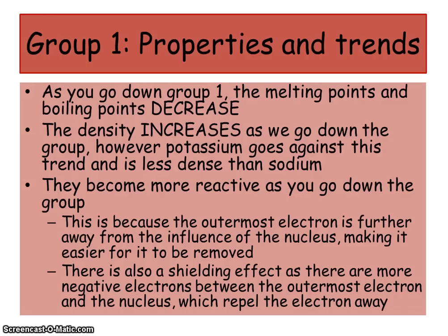Why are these metals so reactive? It's because they've got one electron in their outer shell, and they hate that — they just want to be stable with eight electrons. The outermost electron is furthest away from the influence of the nucleus, so it makes it easier for it to be removed. There is also something called the shielding effect, where there are more negative electrons between the outermost electron and the nucleus, which repel the electron away.